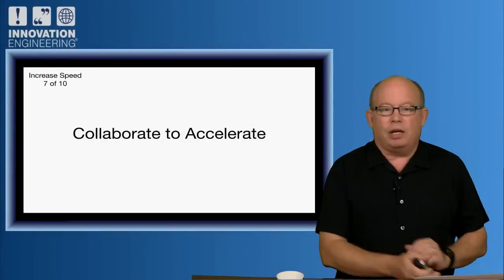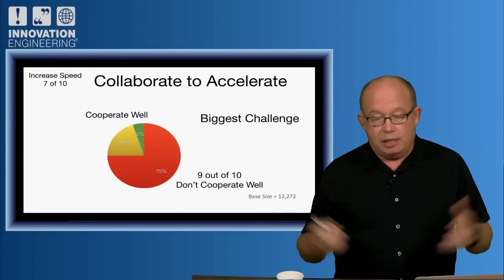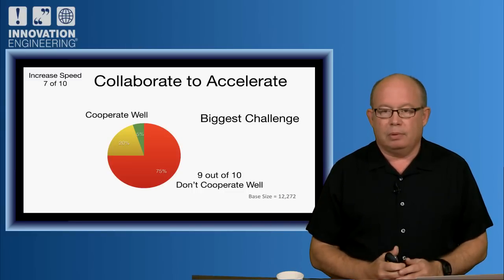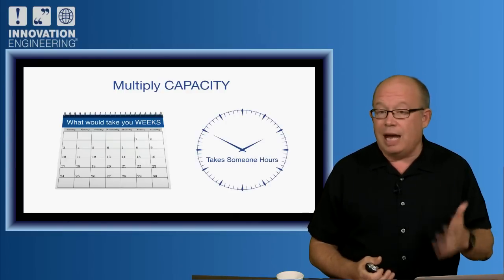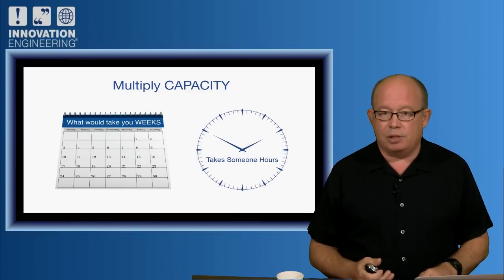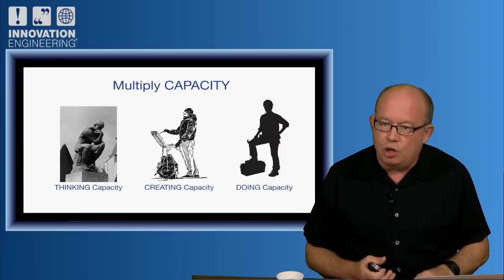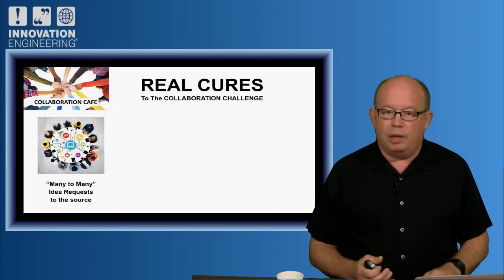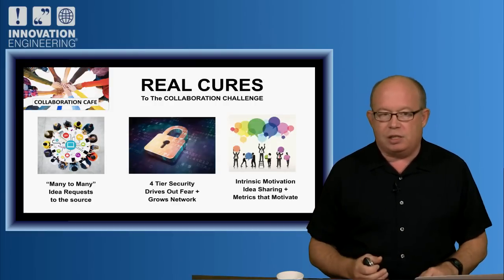Number seven: collaborate to accelerate. This is the real challenge. It's almost impossible to get people to collaborate. In our big surveys, 12,000 plus, we find that nine out of 10 people don't cooperate well. What we're talking about is multiplying capacity. What would normally take you weeks can now take somebody else's hours. We're talking about thinking capacity, creating capacity, doing capacity, opening up our minds with systems that drive out fear and intrinsic motivation.